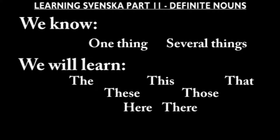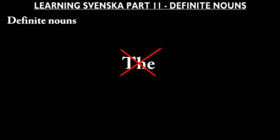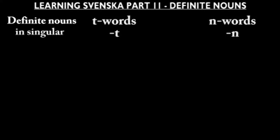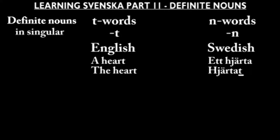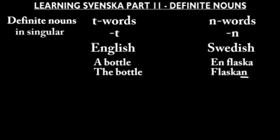Let's start with just the simple definite form, regardless of wherever it's here or there. Contrary to English, Swedish doesn't have a word for 'the', but instead inflects the noun by adding a suffix. In singular it's as simple as -t for t-words and -n for n-words. If the noun already ends on a vowel, like ett hjärta, you will just add the -t: hjärtat. Or if you take a look at an n-word, en flaska: flaskan.